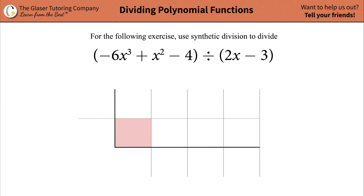Howdy, partner. Keep on rolling, baby. You know what time it is — synthetic division time. So what we're going to do is look at the following problem: negative 6x cubed plus x squared minus 4, divided by 2x minus 3.